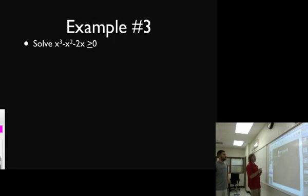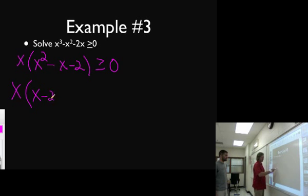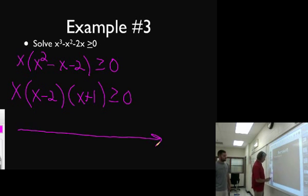Is this the one we're on now? I think we should probably factor this. Let's do it algebraically. So let's factor an x out. And then hopefully that x squared minus x minus two is factorable. X times x minus two times x plus one. So now we've got a similar situation as example one.